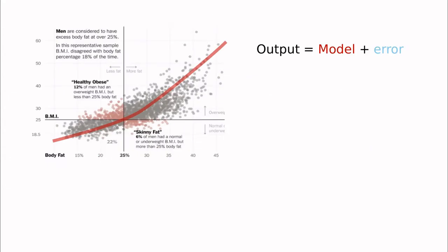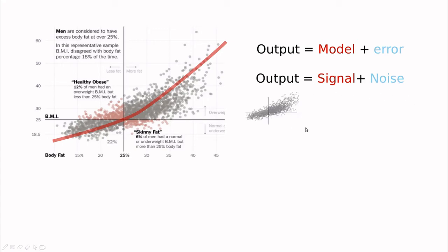This is going to help us introduce different concepts. The variable that we want to predict is called the output. We are going to distinguish between the model, which is a very smooth line here, and the error — everything that is not exactly on top of this line. Sometimes we talk about signal and noise, and a good model is something that reduces the noise to a minimum and tries to maximize the signal.